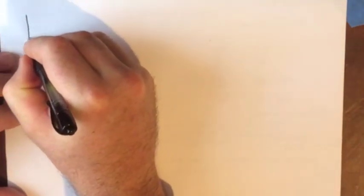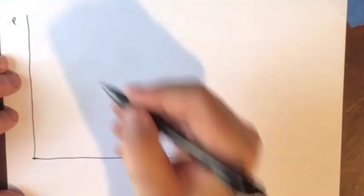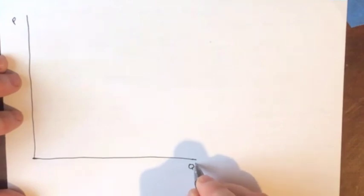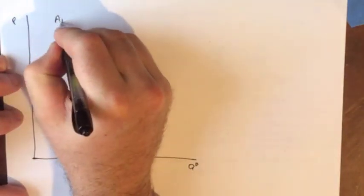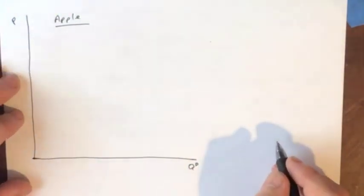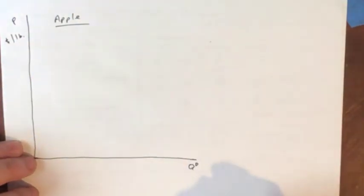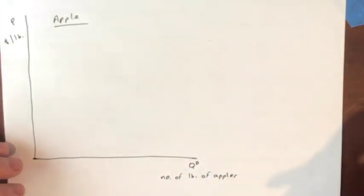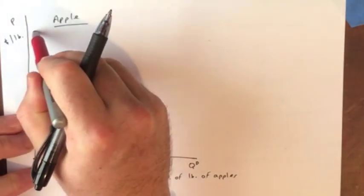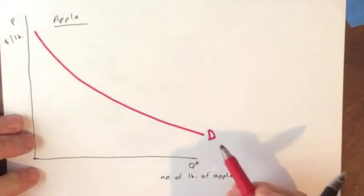If we put this together, we're going to get a downward sloping demand curve. We're going to put price on the vertical axis and quantity demanded on the horizontal axis. Let's stick with our apple example. So the price would be the number of dollars per pound of apples, and the quantity demanded would be the number of pounds of apples.